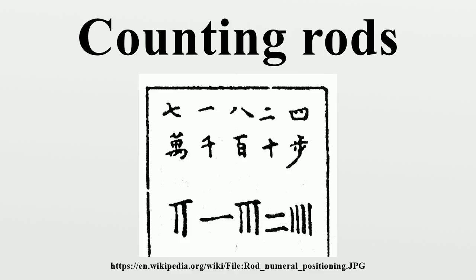In Japan, Seiki Takakazu developed rod numerals into symbolic notation for algebra and drastically improved Japanese mathematics. After his period, the positional numeral system using Chinese numeral characters was developed, and the rod numerals were used only for the plus and minus signs.